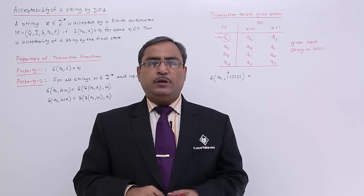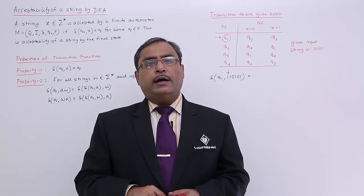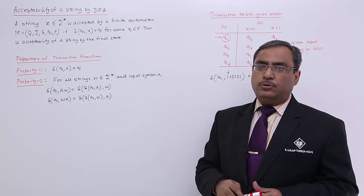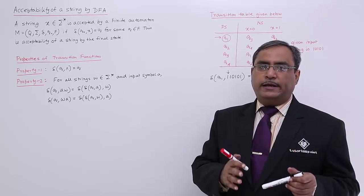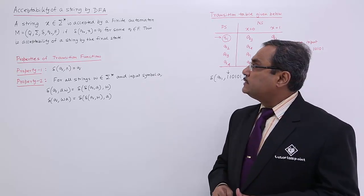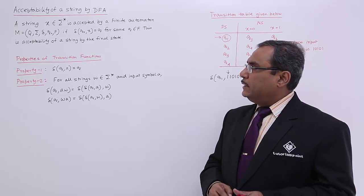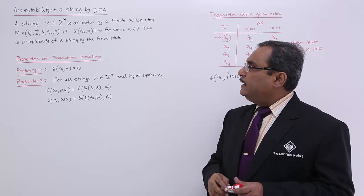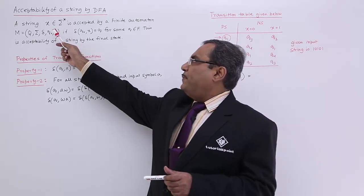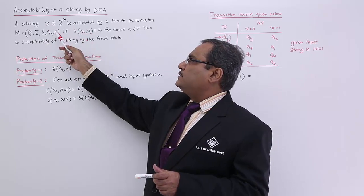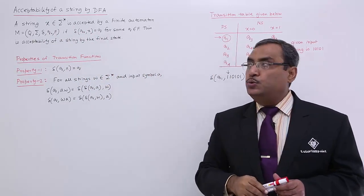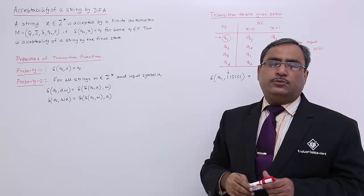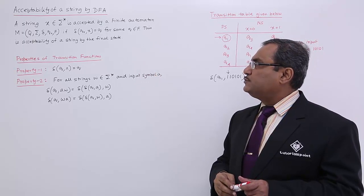In this session, we are discussing acceptability of one input string by a DFA. A string x belonging to sigma star — where sigma is a finite non-empty set of input symbols — is accepted by a finite automaton m (having components q, sigma, delta, q0, f) if delta(q0, x) equals q, and if we reach a terminating state q that belongs to the set of final states f. Then the string x will get accepted by this DFA.